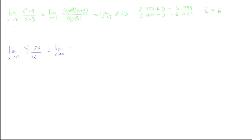We can pull out an x on the top, and we get x times x minus 2. This is going to be all over 4x. We can cancel out this x with this x. And we get the limit, as x goes to 0. This is now of x minus 2 over 4.